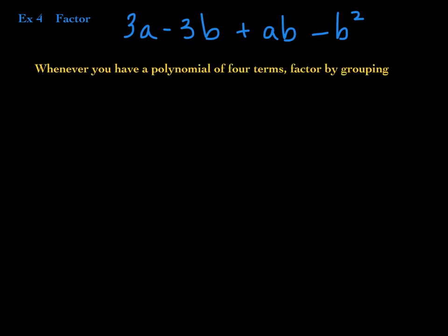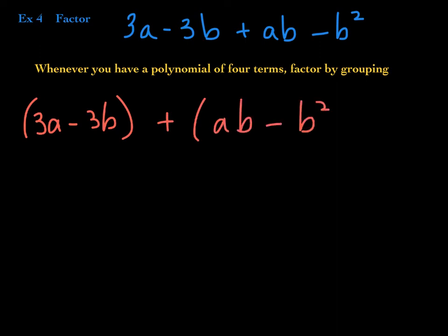Let's factor by grouping. The first step is to put all four terms into two groups of two. I have a habit of putting the first two terms together and then the last two terms together, making two groups. Be careful — the sign in front of a term always belongs to that term. Always put a plus sign between your two groups. You can verify these parentheses can be removed by the associative property of addition.